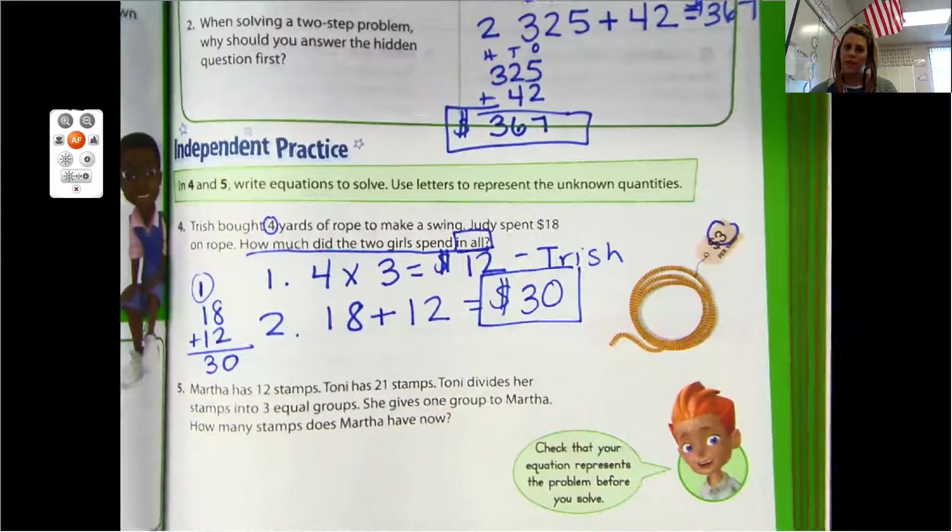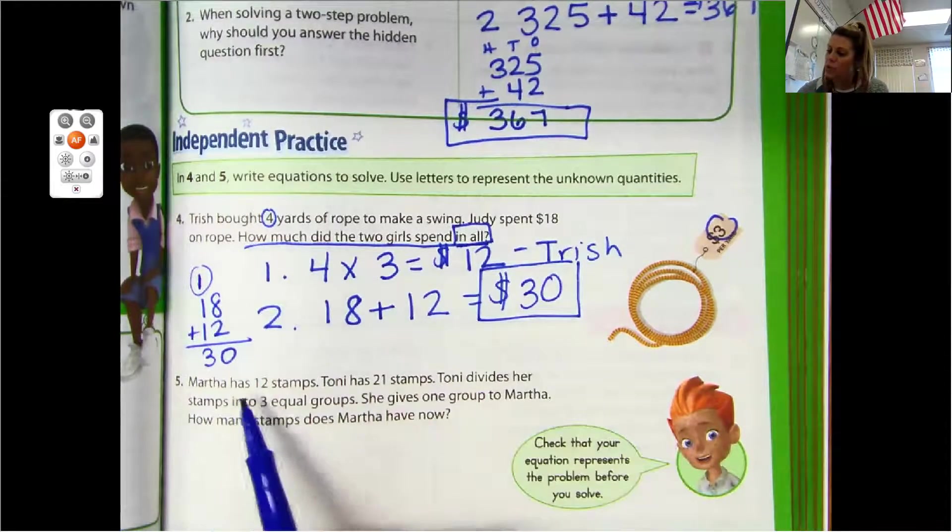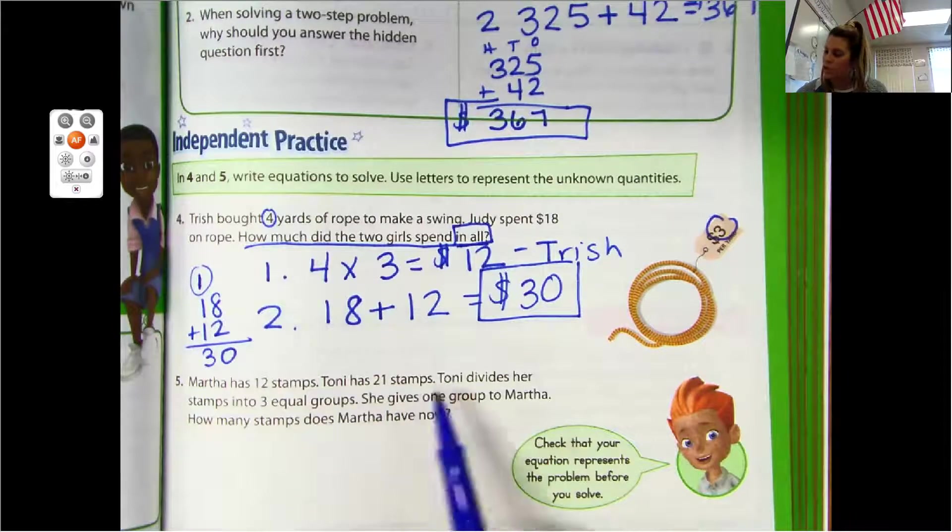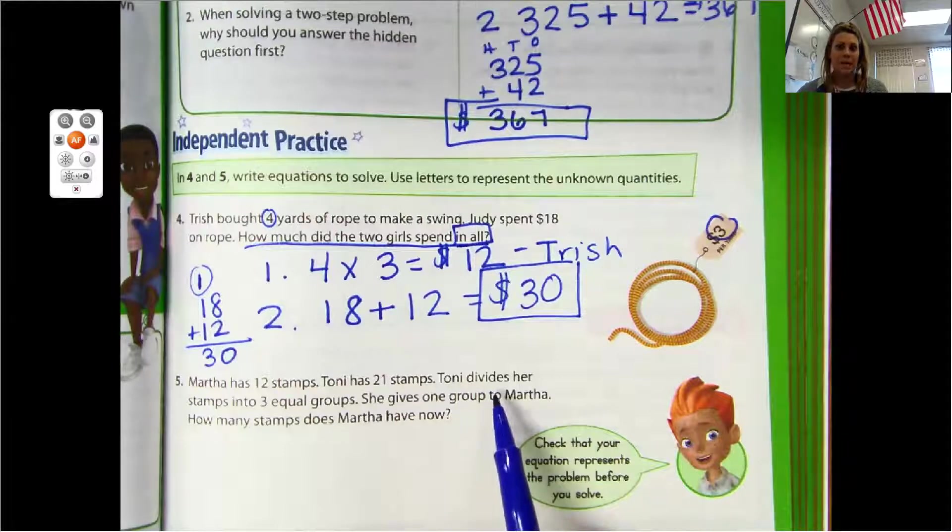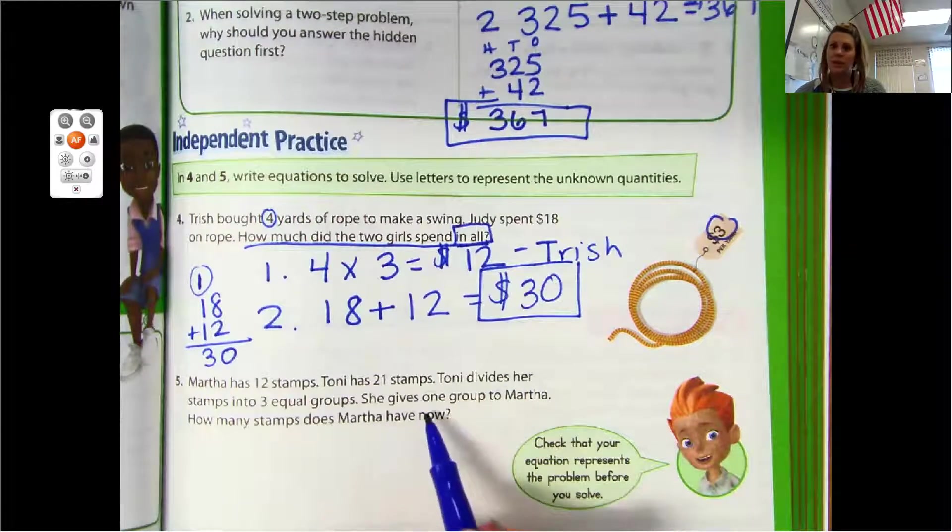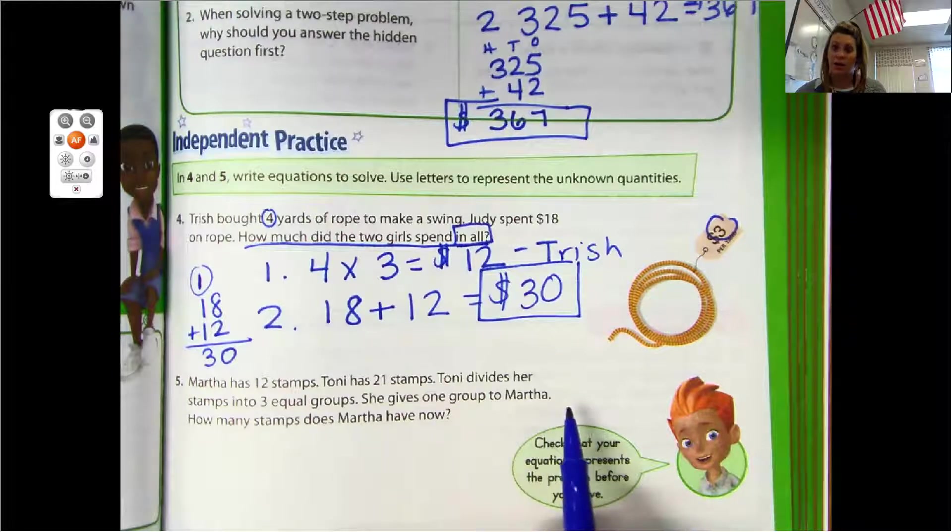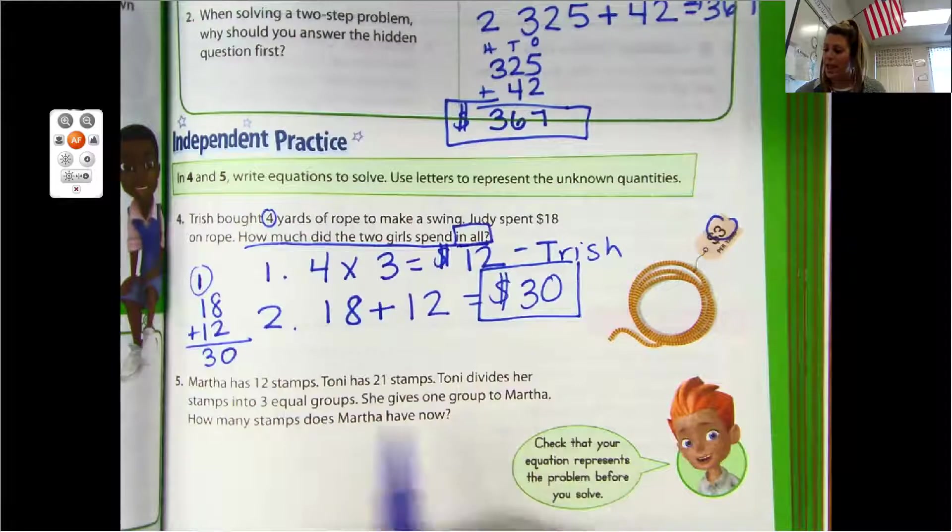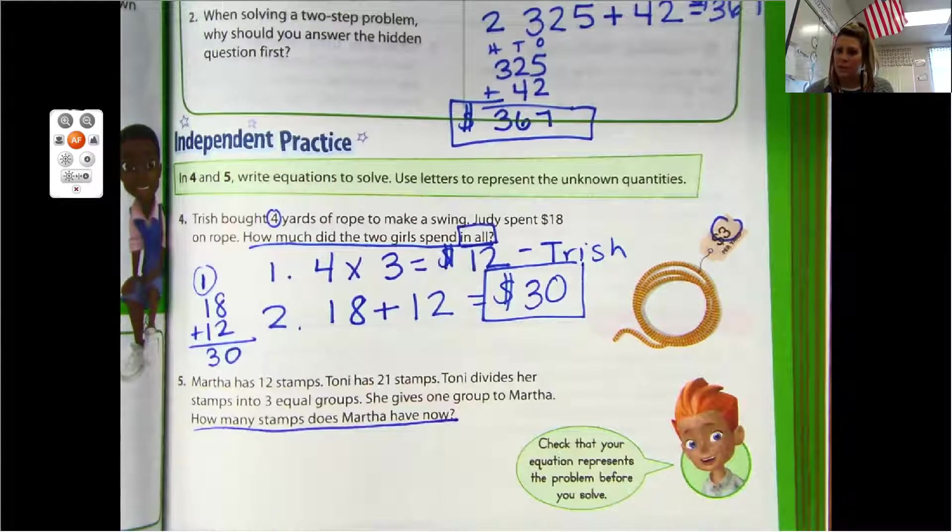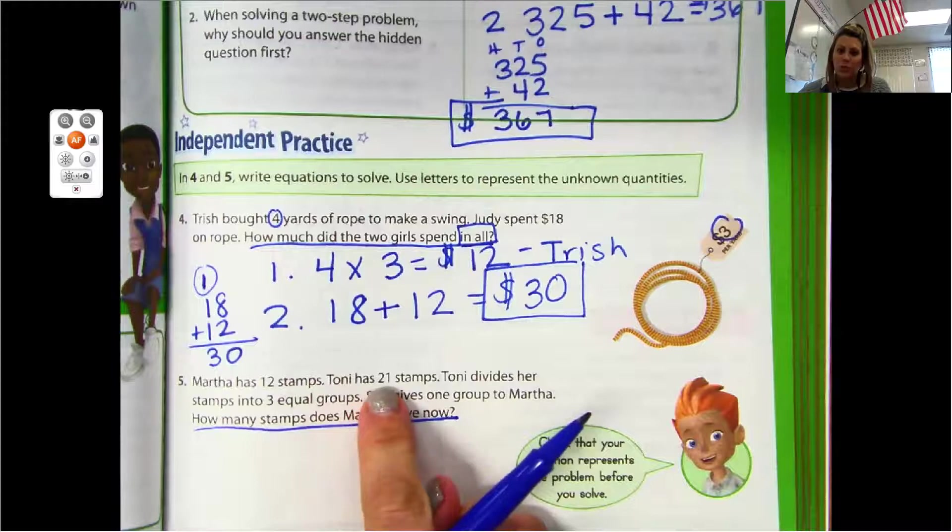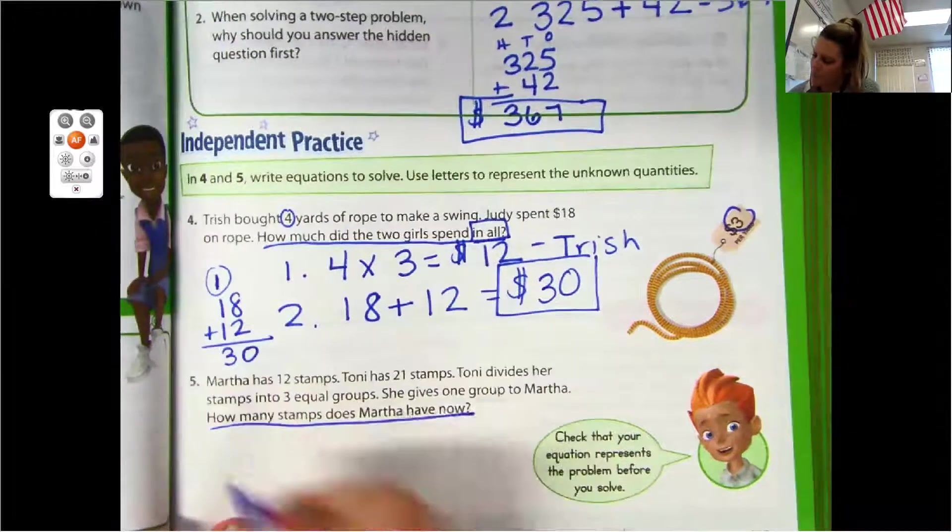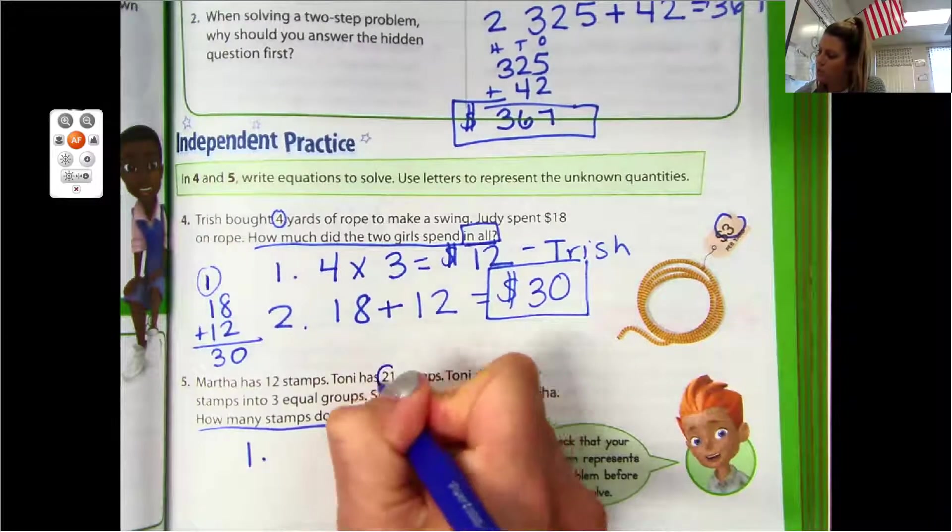Last one we are going to do together. Read along with me. Martha has 12 stamps. Tony has 21 stamps. Tony divides - is that a keyword? - her stamps into three equal groups. She gives one group to Martha. I'm hearing a lot of keywords that are helping me here. How many stamps does Martha have now?